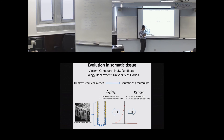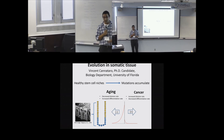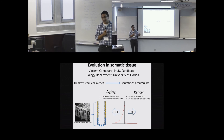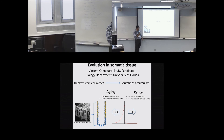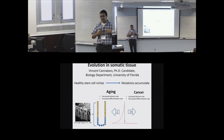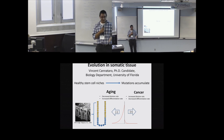I'm interested in the distribution of fitness effects in somatic tissue. This distribution has been measured for whole organisms in mutation accumulation experiments, but my dissertation focuses on how this process differs within somatic tissue. I'm specifically modeling intestinal stem cell crypts — small niches of maybe 6 to 20 cells — representing the body as an amalgam of many small cell populations.